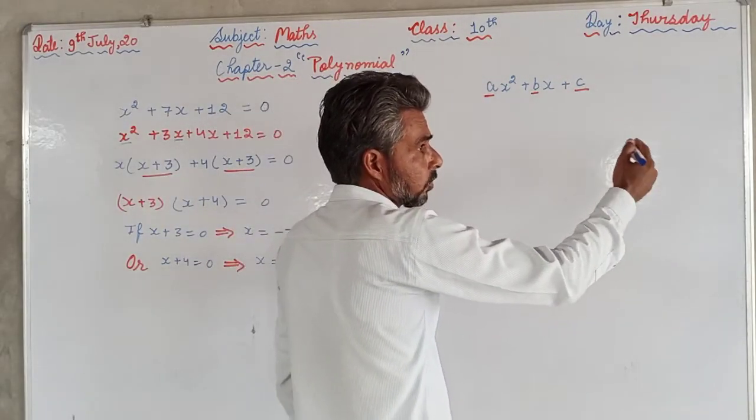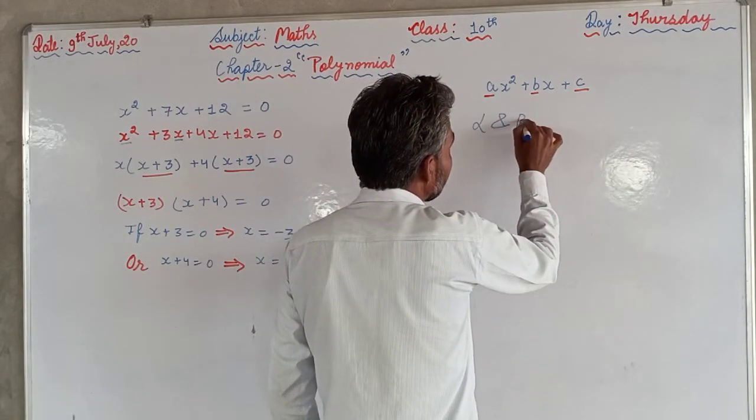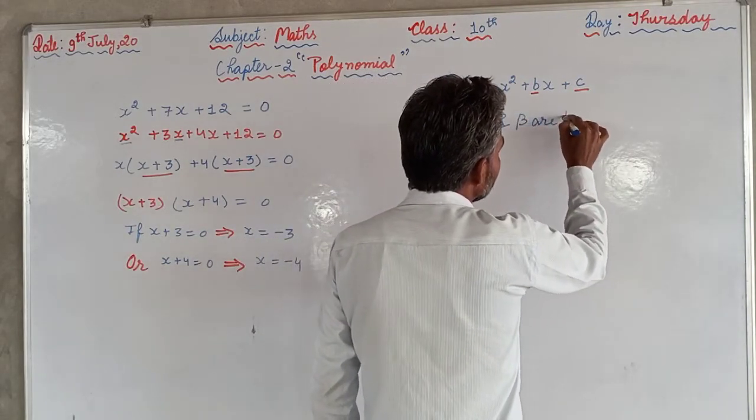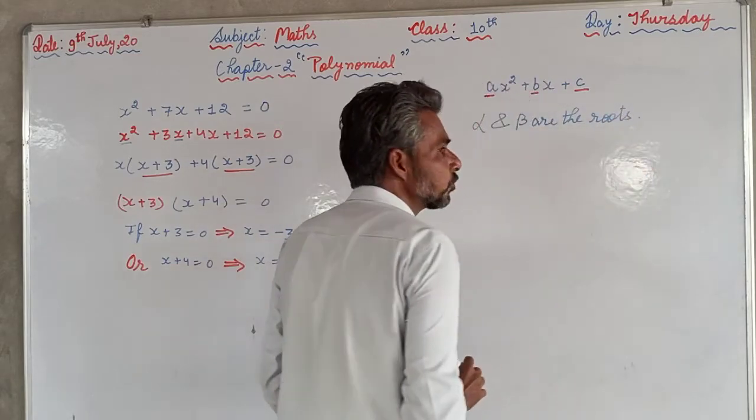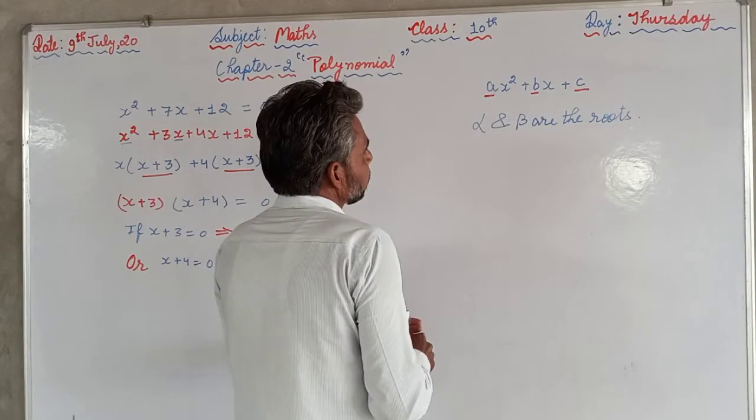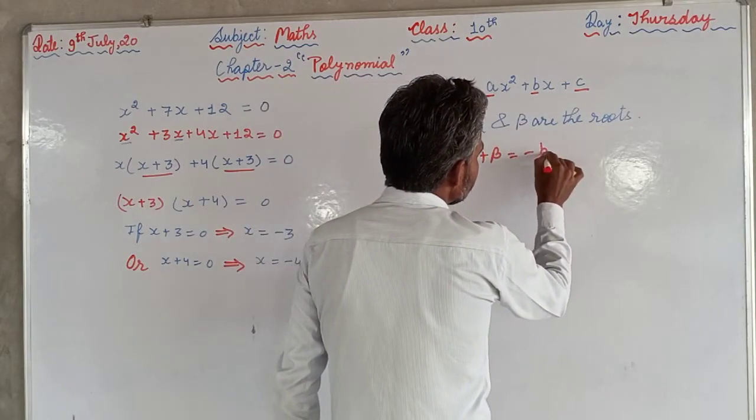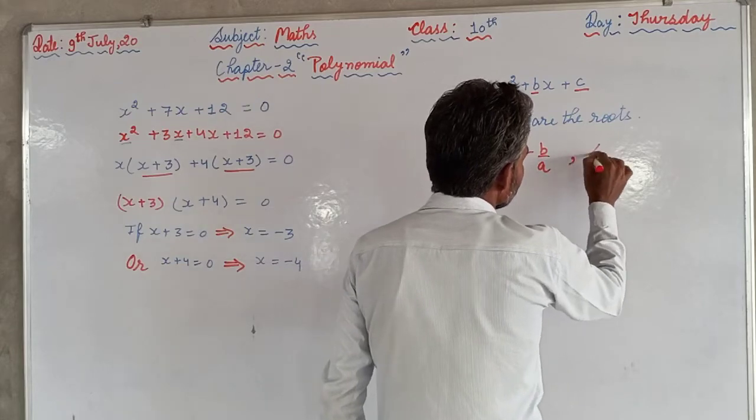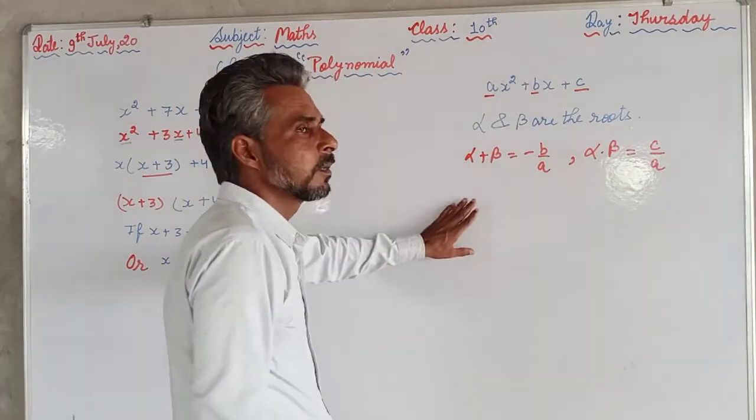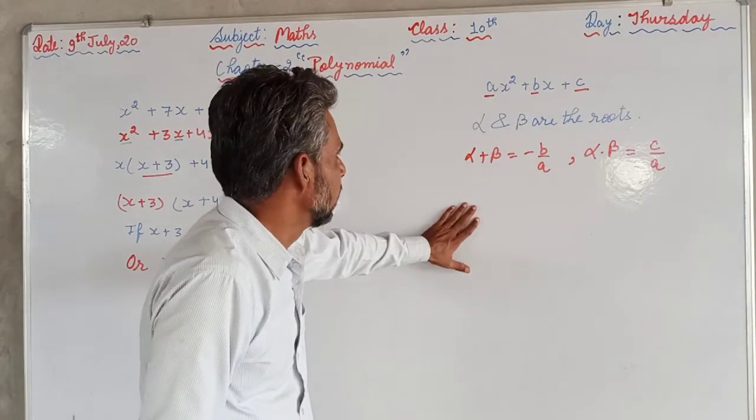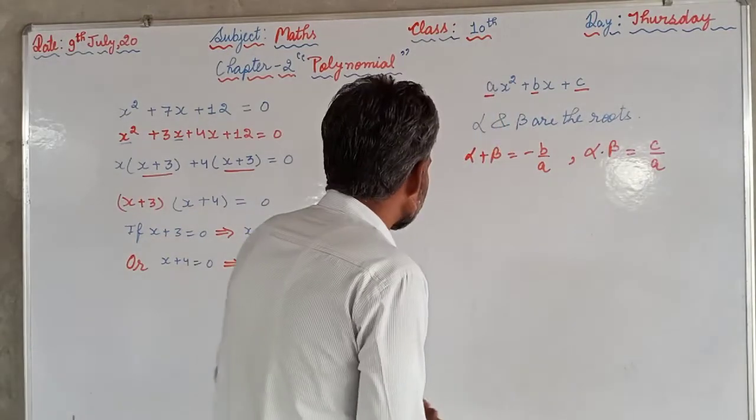The zeros of a quadratic equation can be represented by α and β are the roots. Roots means the solution or zeros. And α + β is equal to -b/a. α × β is equal to c/a. This is the relation between the roots and the coefficient of the polynomial.